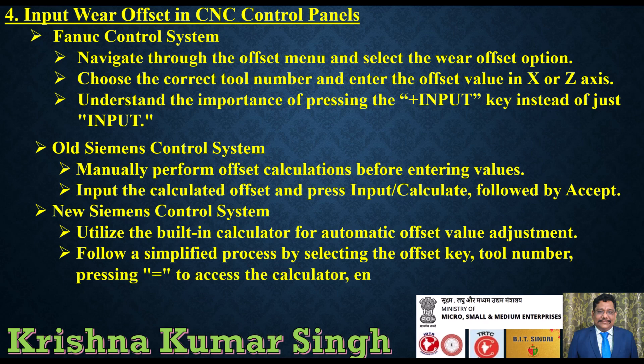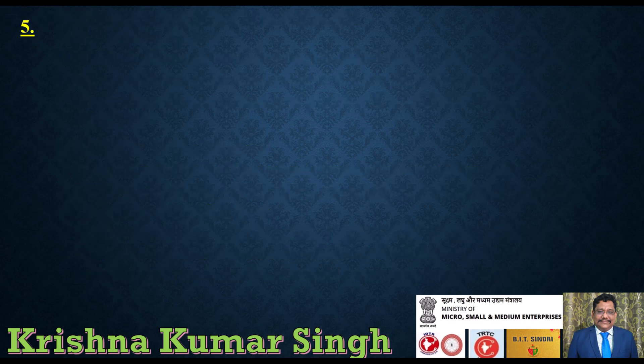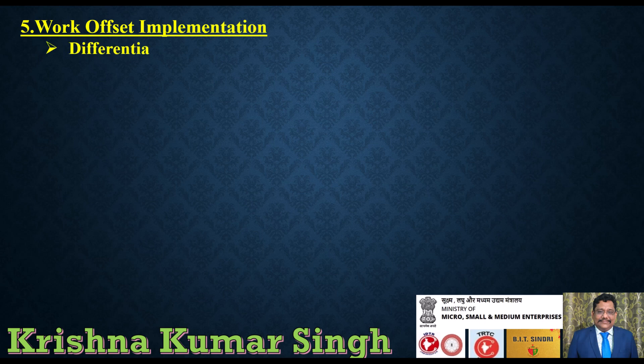New Siemens control system: utilize the built-in calculator for automatic offset value adjustment, following a simplified process by selecting the offset key, tool number, pressing the calculator key to access the calculator, entering values, and pressing accept.